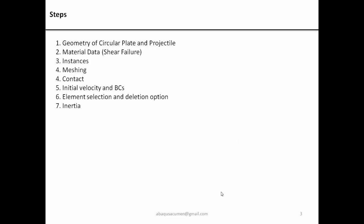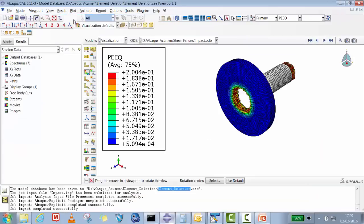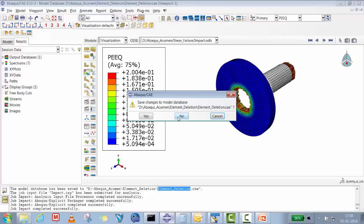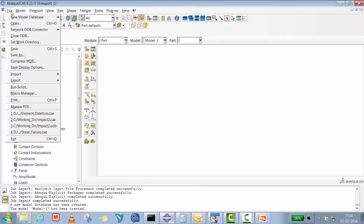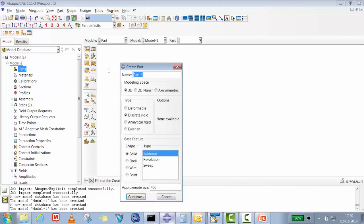The steps we are going to use: create the geometry for the circular plate and projectile, use metal data, then manually edit it in Abaqus CAE for shear failure, create instance, mesh, contact, initial velocity, boundary condition, element deletion option, and then define inertia. Now I'll create a new model and select a directory to start.